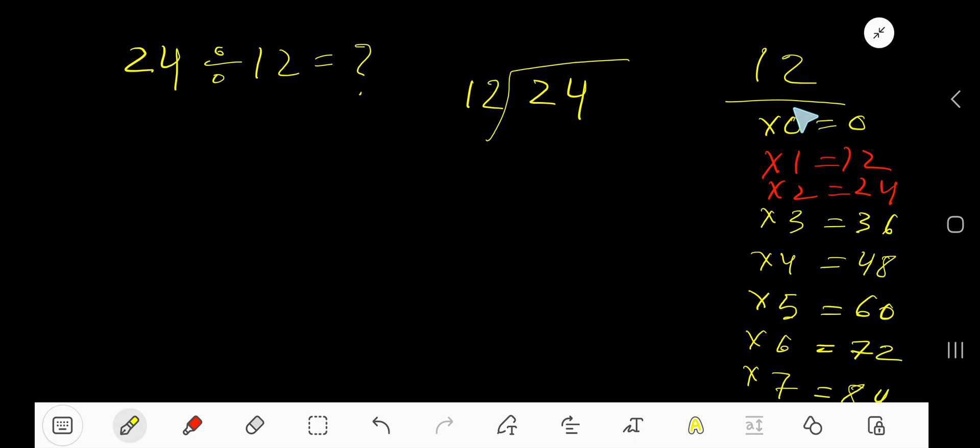To find out the multiplication table of 12 easily, just add 12 to the previous step. 0 plus 12 equals 12, 12 plus 12 equals 24, 24 plus 12 equals 36, 36 plus 12 equals 48. This is the easy way to find out the multiplication table of 12.